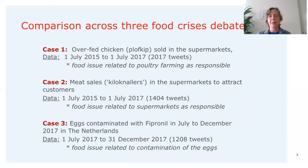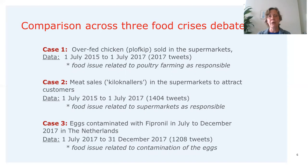I'm going to show some networks across three food crisis debates, all of which took place in the Netherlands. The first case is about overfeeding chicken so that chicken can be sold in supermarkets at a cheap price. This debate frames the poultry farming industry — trying to maximize profits — as responsible for the problem, and it resulted in animal welfare organizations boycotting these overfed chicken products sold in supermarkets.